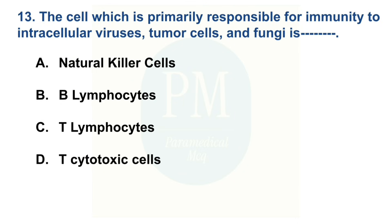A cell which is primarily responsible for immunity to intracellular viruses, tumor cells and fungi is: Option A: Natural killer cells. Option B: B lymphocytes. Option C: T lymphocytes. Option D: T cytotoxic cells. The correct option is Option C: T lymphocytes.